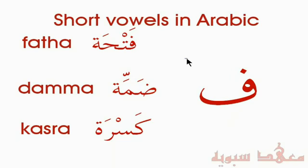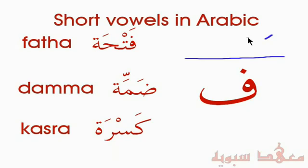Let's assume that this is the line where we write. The Fatha would be on top of the letter. Dhamma would be on top as well. And Kasra would be on the bottom. So: Fatha, Dhamma, Kasra.